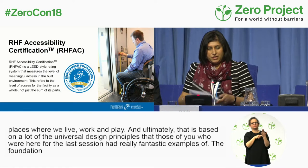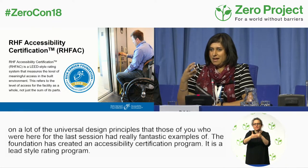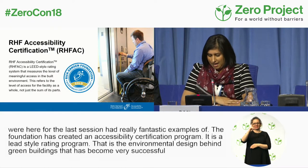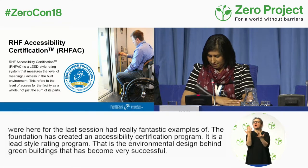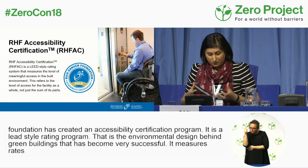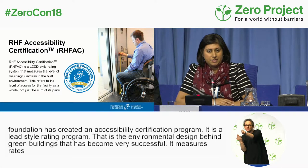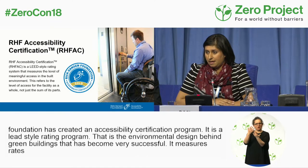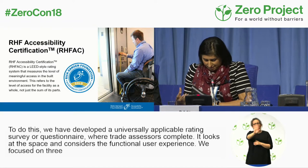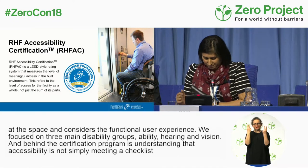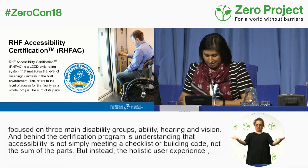The foundation has created an accessibility certification program — a LEED-style rating system. LEED is the environmental design behind green buildings that has become very successful. It measures, rates, and certifies meaningful access in the built environment. We've developed a universally applicable rating survey where trained assessors complete a questionnaire that looks at the function of a space and considers the holistic user experience. We focused on three main disability groups: mobility, hearing, and vision. Behind the certification program is the understanding that accessibility is not simply meeting a checklist or building code — it's not the sum of the parts — but rather it's looking at the holistic user experience, focusing on universal design principles, and creating inclusion.